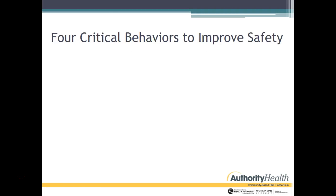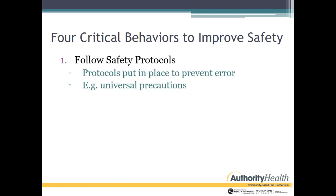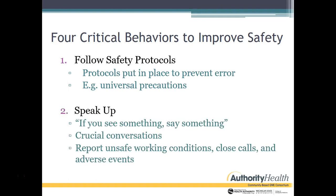Now let's talk about four critical behaviors to improve safety. Number one: follow safety protocols. These are protocols put in place to prevent error — for example, universal precautions or hand hygiene protocols. Number two: speak up. This is really hard, especially as a young resident, but if you see something, you need to say something. These are crucial conversations. If you see an unsafe working condition, even a close call or especially an adverse event, speak up to someone you trust or use the anonymous reporting system.